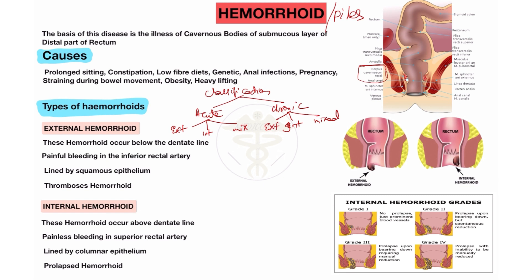Internal hemorrhoid is divided into four grades. First grade: there is no prolapse — only prominent blood vessels are seen. Second grade: prolapse occurs on bearing down but there is spontaneous reduction. Third grade: prolapse occurs but manual reduction is required — it does not reduce spontaneously, only manually.